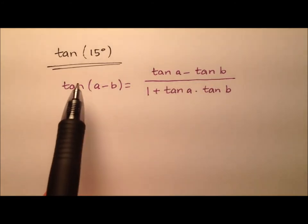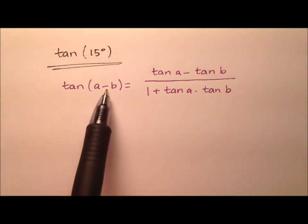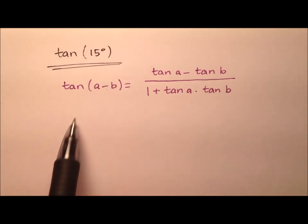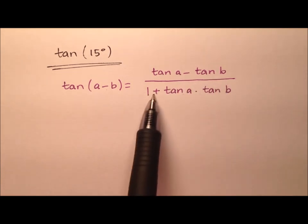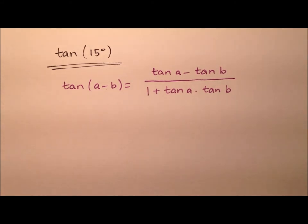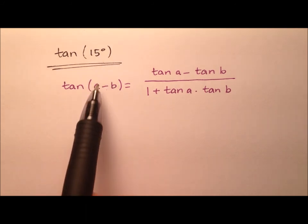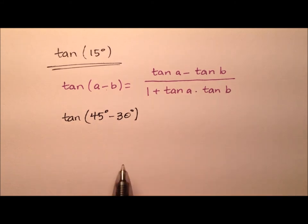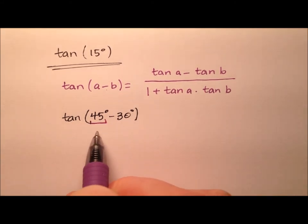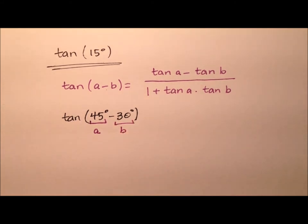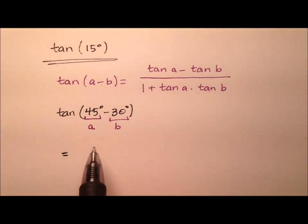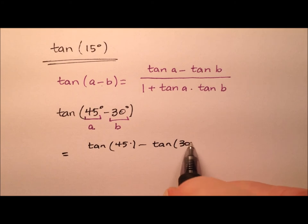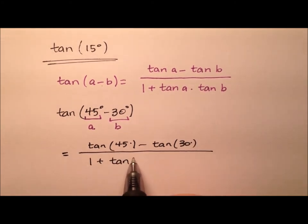In this second method, again looking for the exact value for the tangent of 15 degrees, let's use the difference identity for tangent, which has this expansion. We have two angles subtracting to make 15 degrees: it's going to be the tangent of the first minus the tangent of the second, divided by 1 plus the product of their two tangents. So let's say the tangent of 45 degrees minus 30 degrees, where 45 degrees is our a value and 30 degrees is our b value.